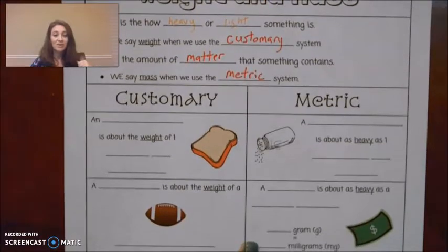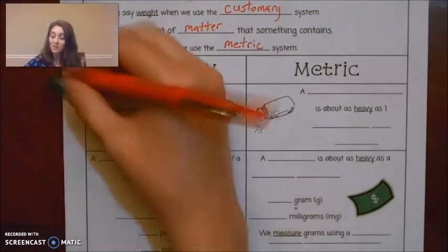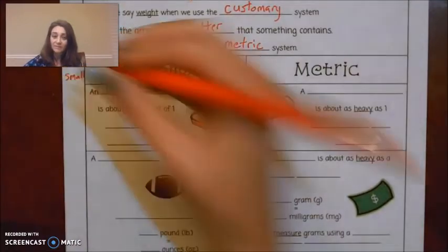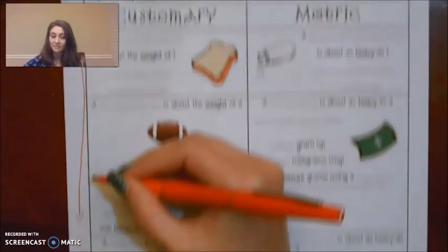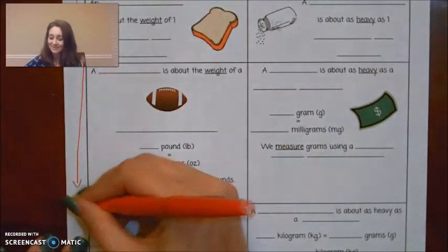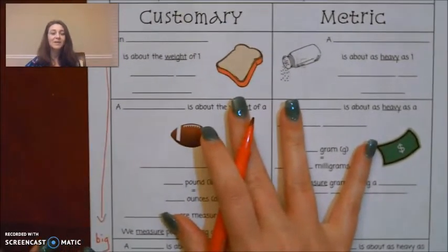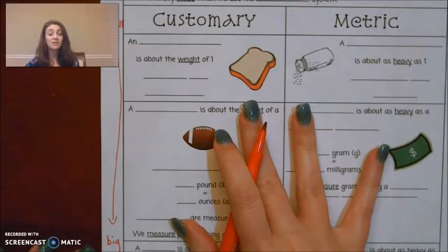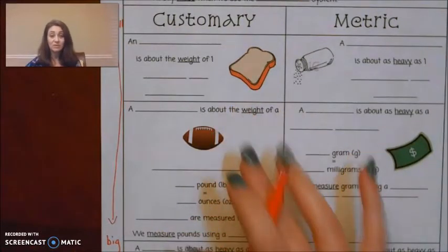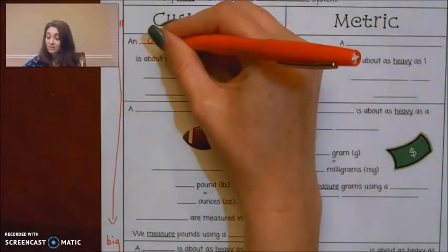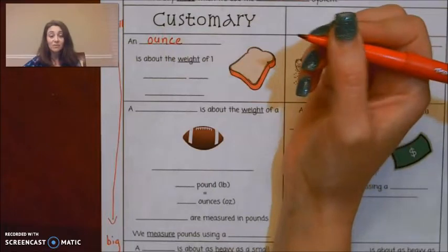All right, we're going to start with customary, and again, we're going to go from small to big. Small units all the way down to big units. All right, here we go. Customary, the smallest unit we're going to use in customary weight measurement. The smallest unit is an ounce. The abbreviation for ounce is OZ.